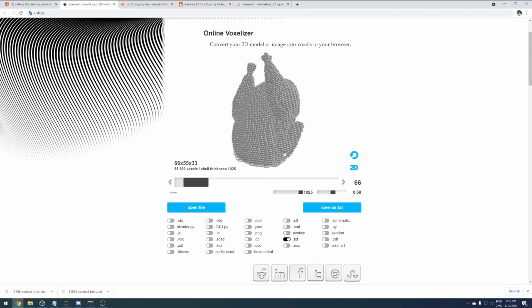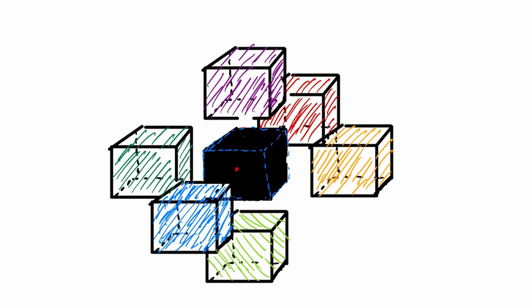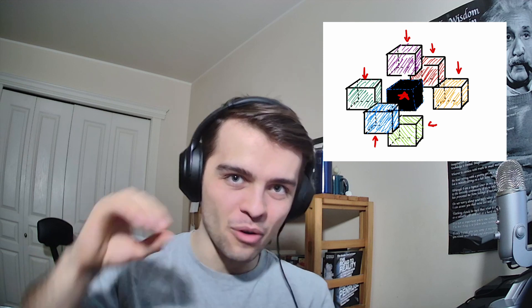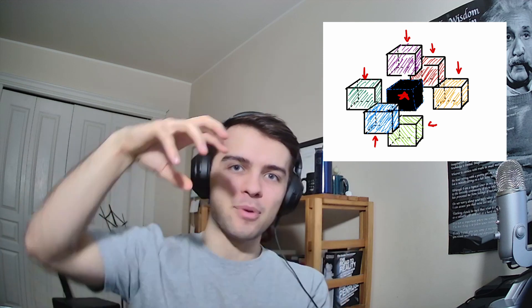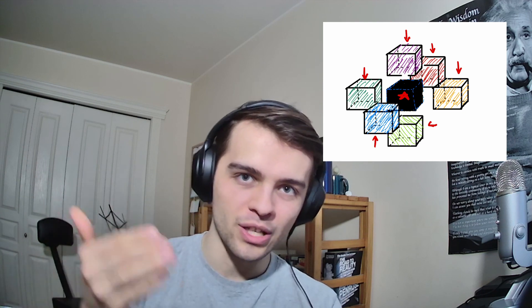While the heat equation might be pretty difficult to understand in differential form, it's actually really easy to understand in discrete form. Remember that voxel file we had with a bunch of cubes all positioned next to each other — each cube has six neighbors: one above, one below, left, right, front, and back. We want to determine whether that center cube is going to heat up or not. The easy way to say it is: take the average temperature of the six surrounding cubes — if it's hotter it heats up, and if it's colder it cools down.